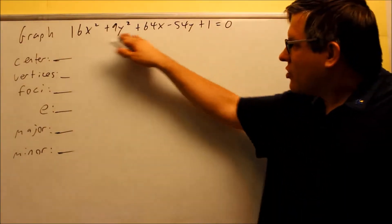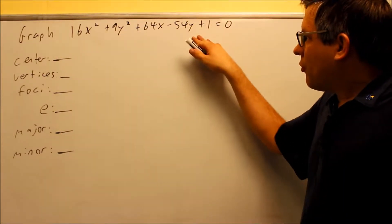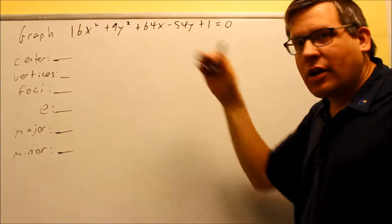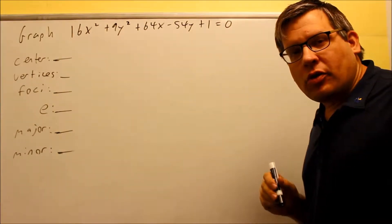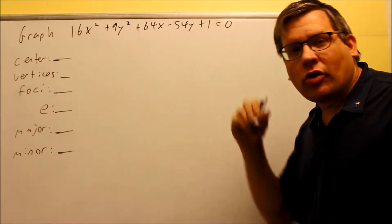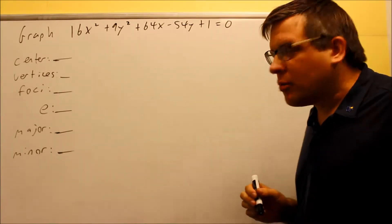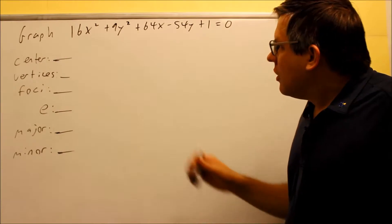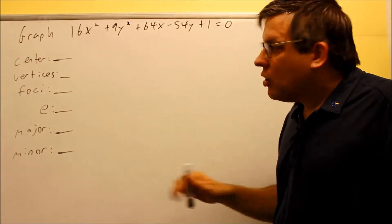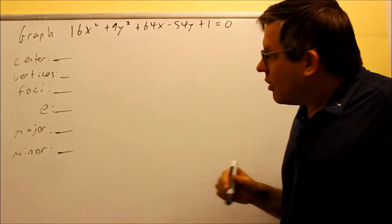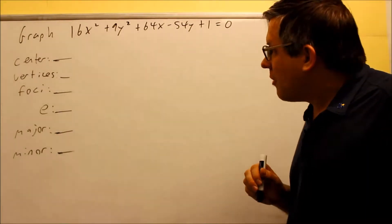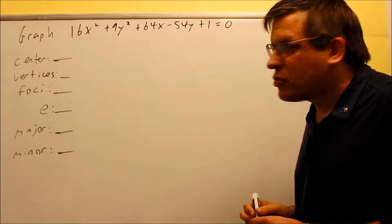This problem is not written in the proper form, so I can't answer any of these just yet because I need to get it into the format we've been looking at. You have to have a 1 after the equal sign, you have to have an x quantity squared over a number and a y quantity squared over a number. We can't tell just from looking at it what the center or the a and b are, so I have to use complete the square steps to put it into proper form.